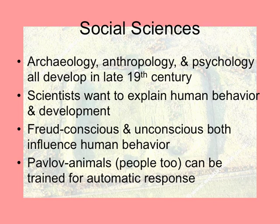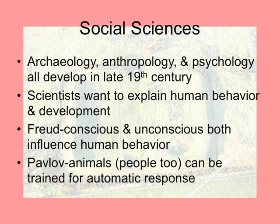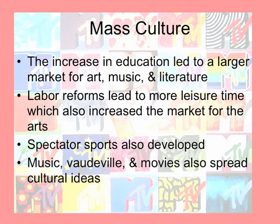Social sciences also take a huge leap forward. Archaeology, anthropology, and psychology all develop in the late 19th century, as scientists want to explain human behavior and development. You get Freud, who discovers we have a conscious and unconscious mind and that both influence our behavior. Pavlov studies animals and theorizes that you can transfer what he's learned about animals to people too — he develops the idea that you can be trained for an automatic response.